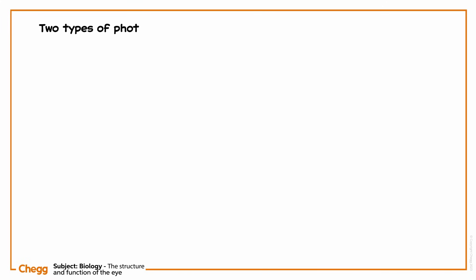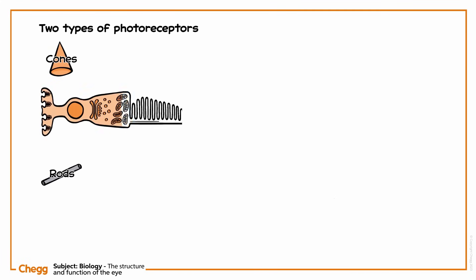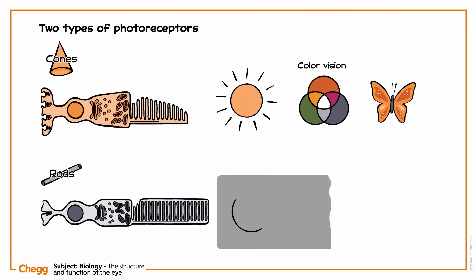There are two types of photoreceptors, rods and cones, named for their shapes. Cones are responsible for colour vision and come in three varieties: red, green and blue. Rods, on the other hand, only detect light and dark, not colour, and help form images under dim conditions.